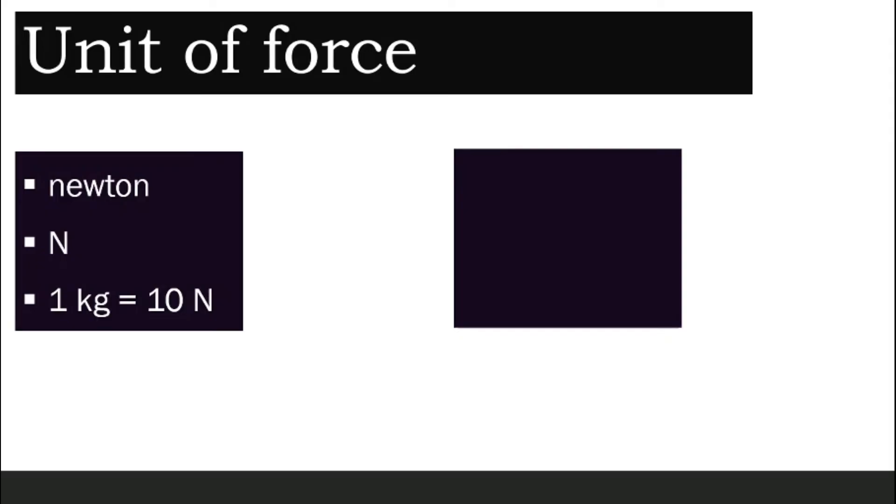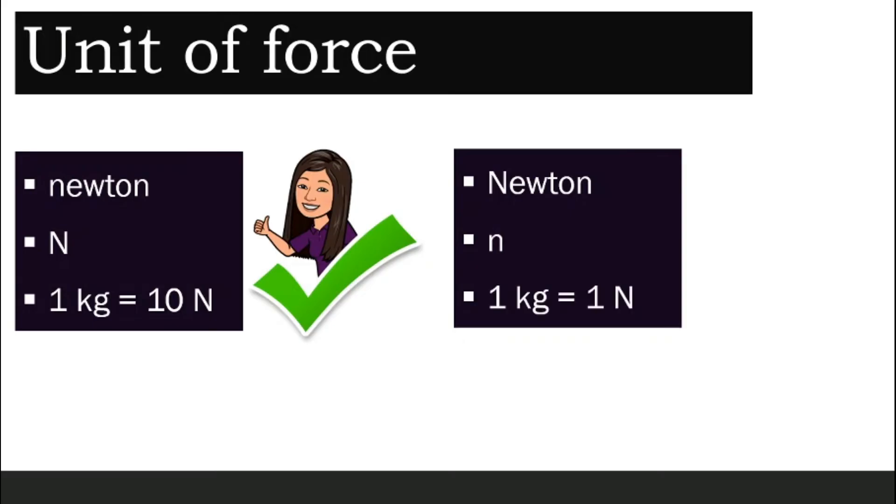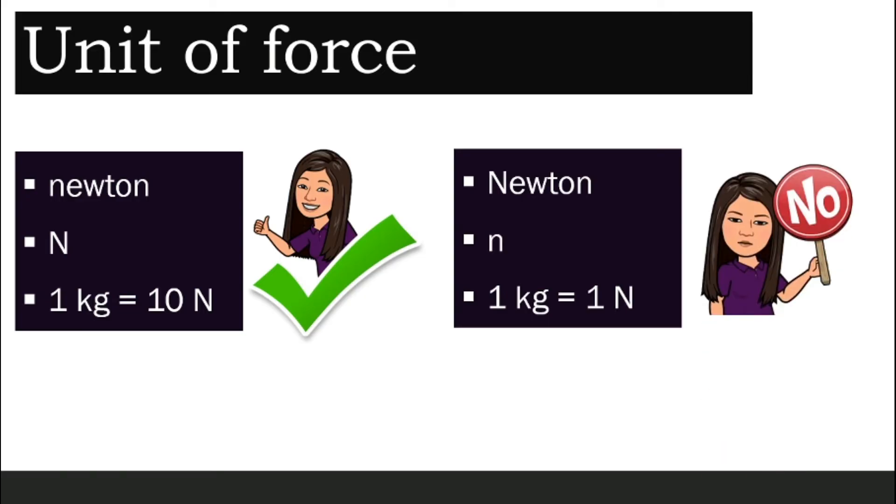So remember, body weight does not equal to body mass. That is the right way. If you write newton with N capital letter or the letter n small letter, or if you think that 1 kg equals to 1 newton, it is wrong. Please pay attention to this.